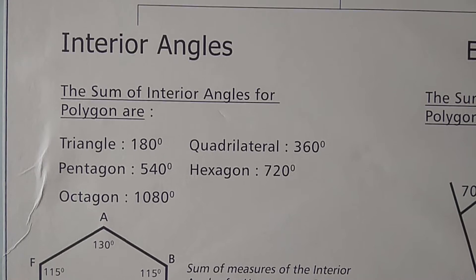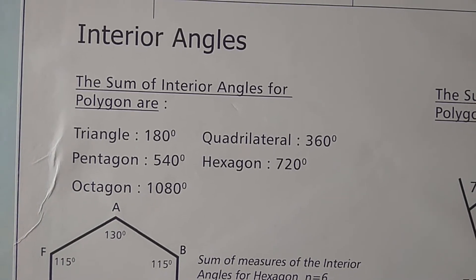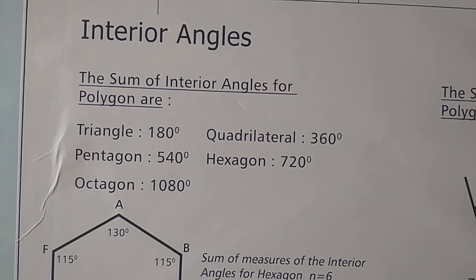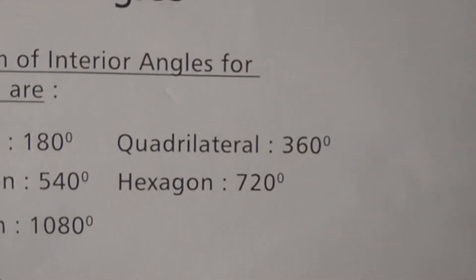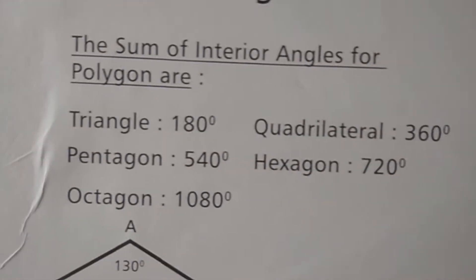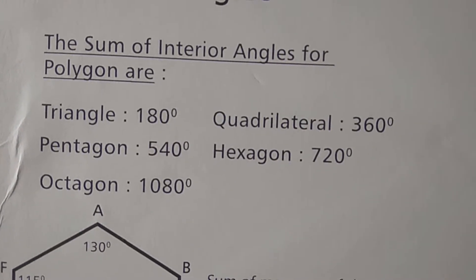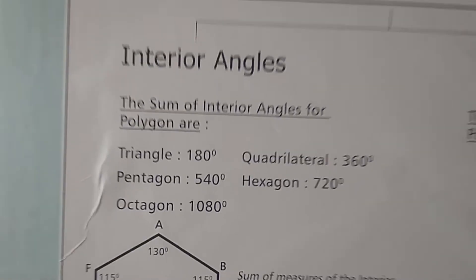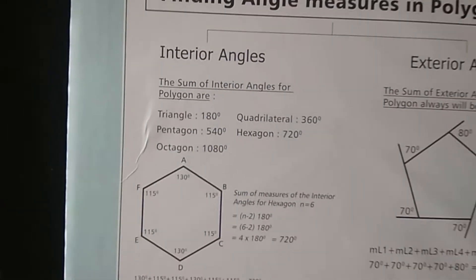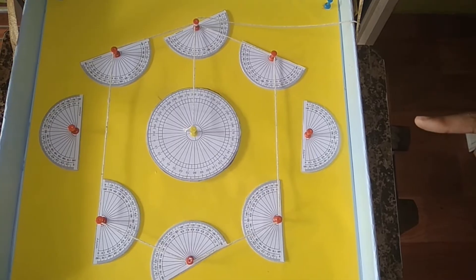Sum of interior angles for polygons: for triangle 180 degrees, quadrilateral 360 degrees, pentagon 540 degrees, hexagon 720 degrees, and for octagon 1080 degrees.